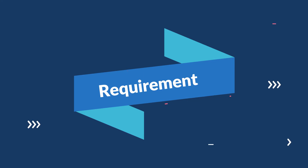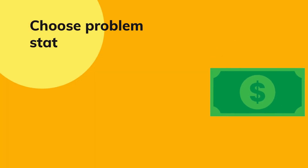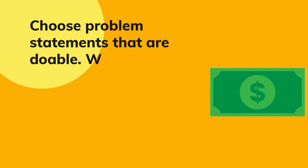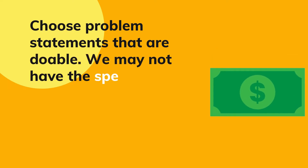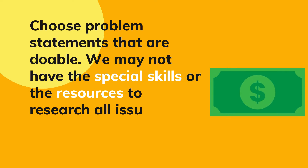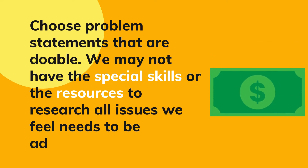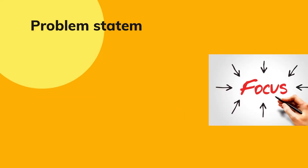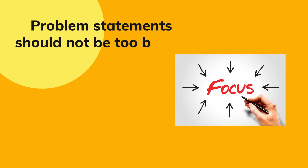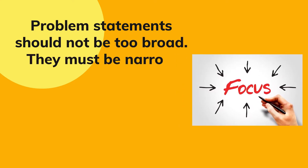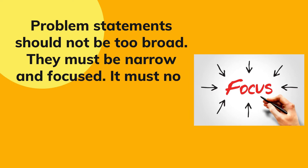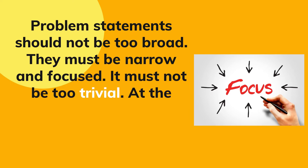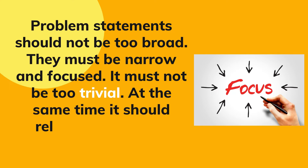There are two important requirements for an ideal research problem statement. We must choose problem statements that are doable — we may not have the special skills, time, or money to research all issues. For example, we may not have the coding skills required for a particular project. Also, problem statements should not be too broad; they must be narrow and focused, not too trivial, and must relate to the particular discipline or field.